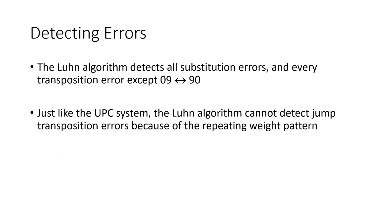The Luhn algorithm detects all possible substitution errors and almost every transposition error. The only transposition it doesn't catch is switching a 0 and 9. Because it uses an alternating weight pattern of 2, 1, 2, 1, it cannot detect jump transposition errors — if two digits separated by one space are swapped, they're still multiplied by the same weights.